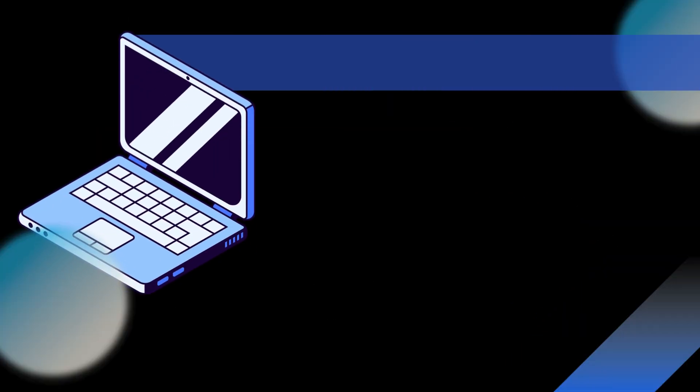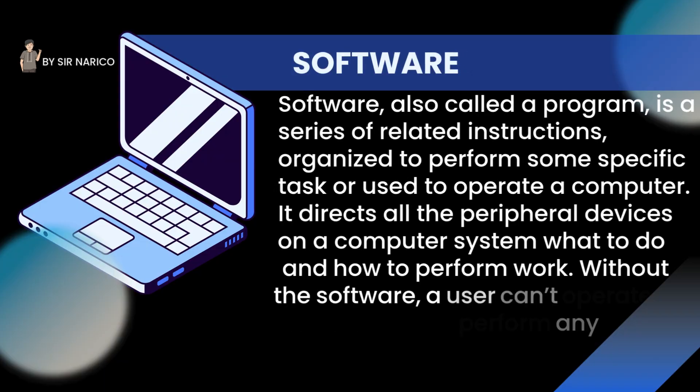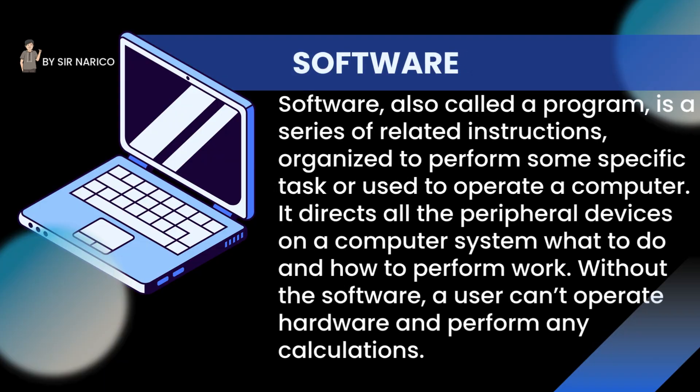Software, also called a program, is a series of related instructions organized to perform some specific task or used to operate a computer. It directs all the peripheral devices on a computer system what to do and how to perform work. Without the software, a user can't operate hardware and perform any calculations.